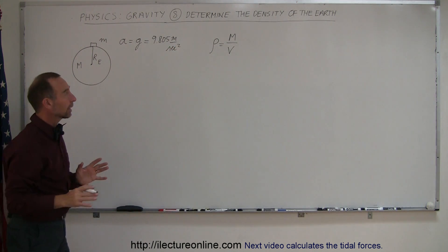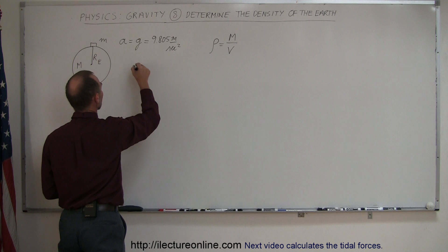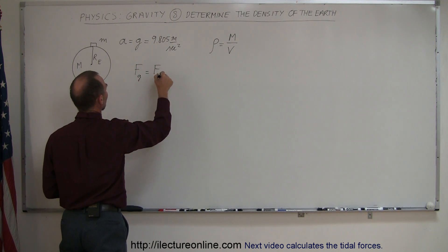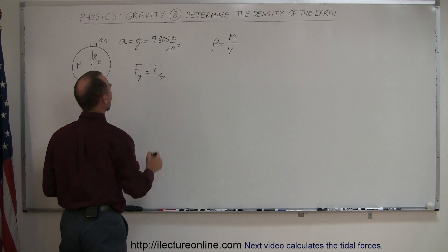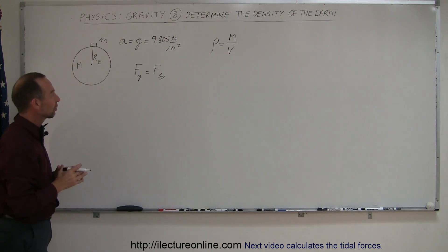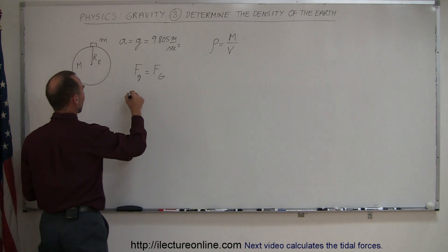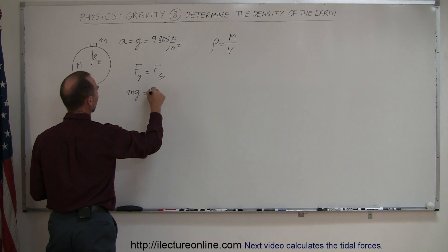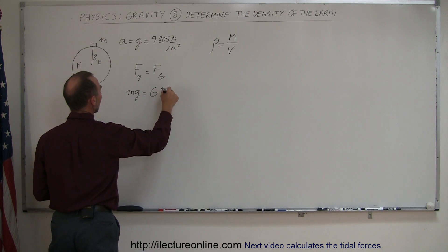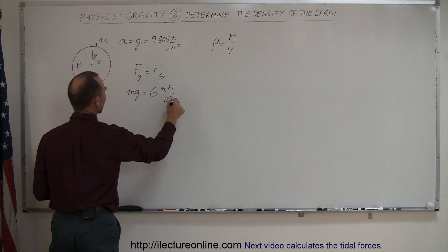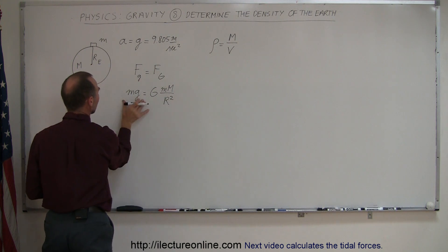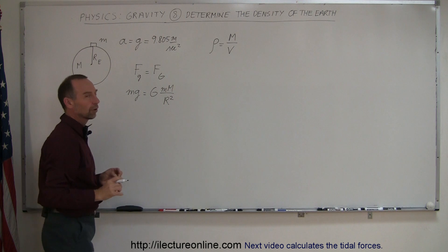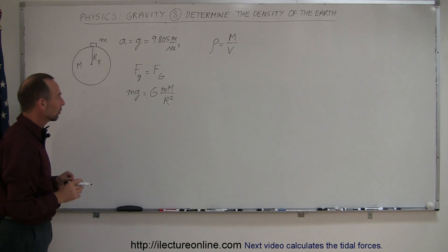We plug that into the equation where the force due to the acceleration of gravity equals the force between any two objects in the universe. So we say that M times g is equal to G times big M, divided by the distance between them squared. The force due to Newton's law equals the universal force of gravity — set those two equal to each other.